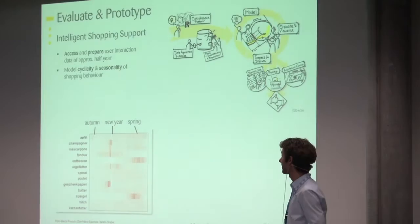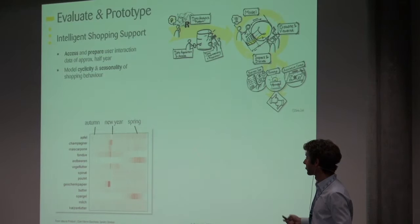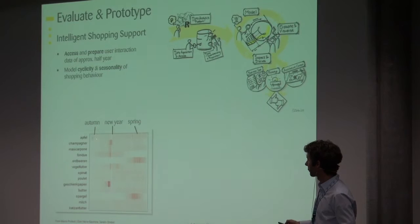We looked at, on the one hand, if an item is bought, when is it bought again, is there a cyclicity? And the other thing is the seasonality of shopping behavior. And this is just one result where you can see some items they can buy. And up here you have the autumn, here is New Year's Eve, and Christmas is a bit before, and over here it becomes spring.